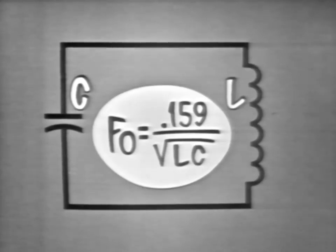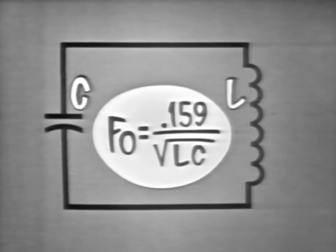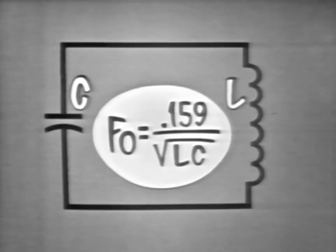As you recall, the resonant frequency of the tank can be determined by the formula F sub O is equal to 0.159 over the square root of LC. Or very simply, the frequency is determined by the size of L and C.